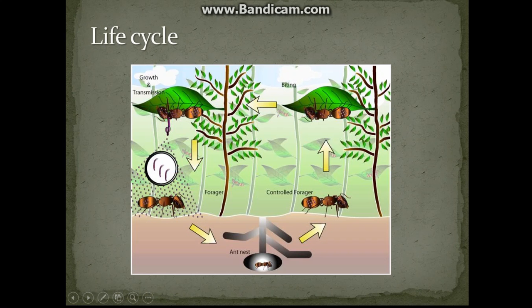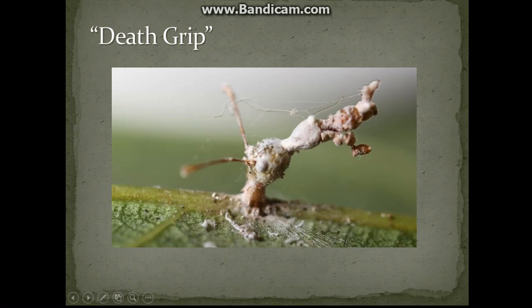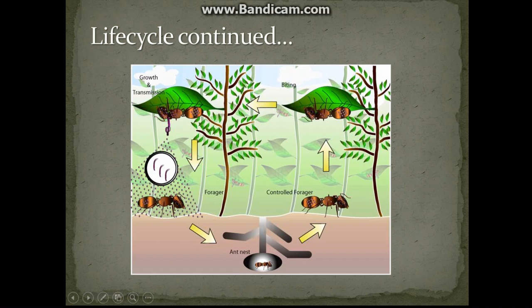The ant will be forced to bite onto a vein of the leaf and, because of the power of the fungus, the ant won't be able to let go — this is commonly known as the death grip. This is what a close-up of the death grip looks like. The ant won't be able to eat or do anything that will help it survive; for around four to ten days it's basically stuck to the leaf with its jaws clamped on. During this period, the fruiting bodies of the fungus will protrude through the ant's head, releasing infected spores that drift into the wind, hit the ground, and wait to be picked up by another ant of the Camponotini tribe to restart the life cycle.